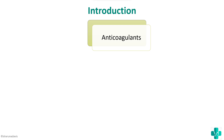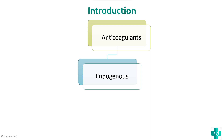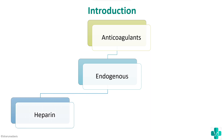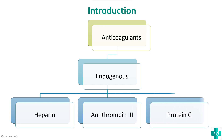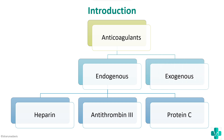Anticoagulants are basically used to prevent clotting of blood. They can be divided into two types: endogenous, which are produced inside the body, and exogenous, which are produced from other sources and not inside the body. Three well-known examples of endogenous anticoagulants are heparin, antithrombin 3, and protein C. In this video we will concentrate more on exogenous anticoagulants.